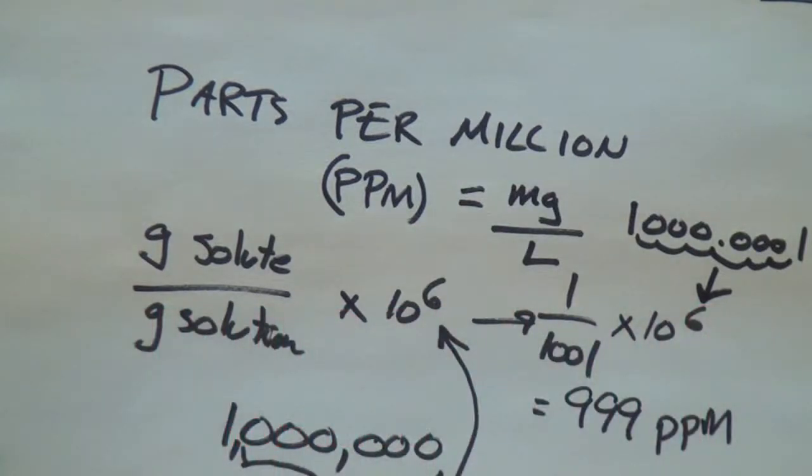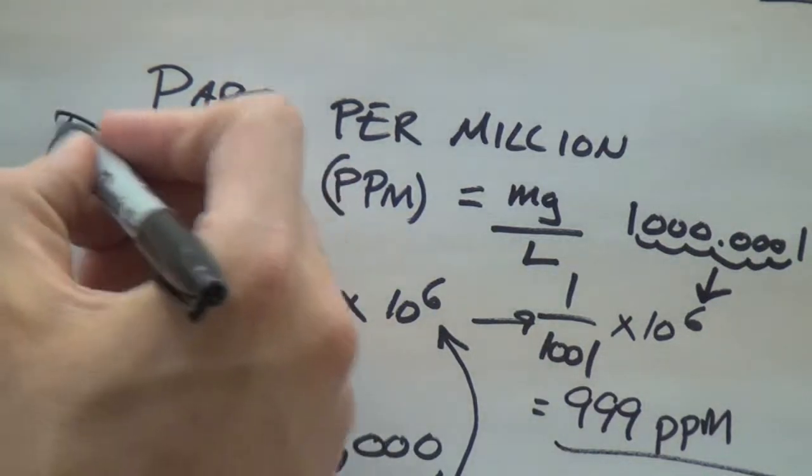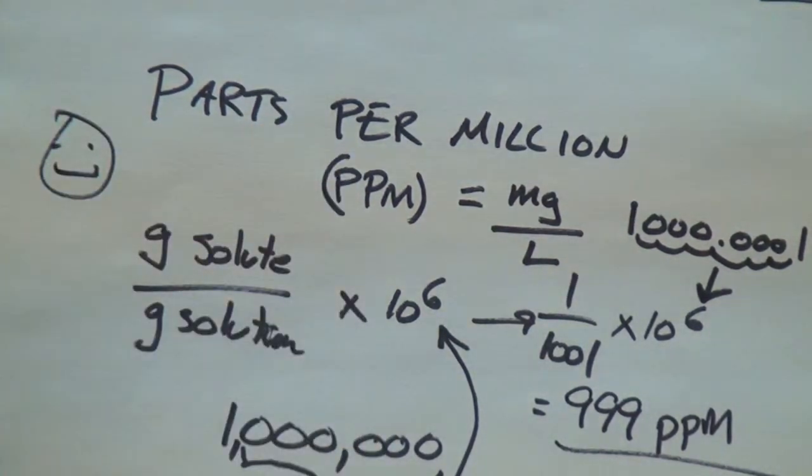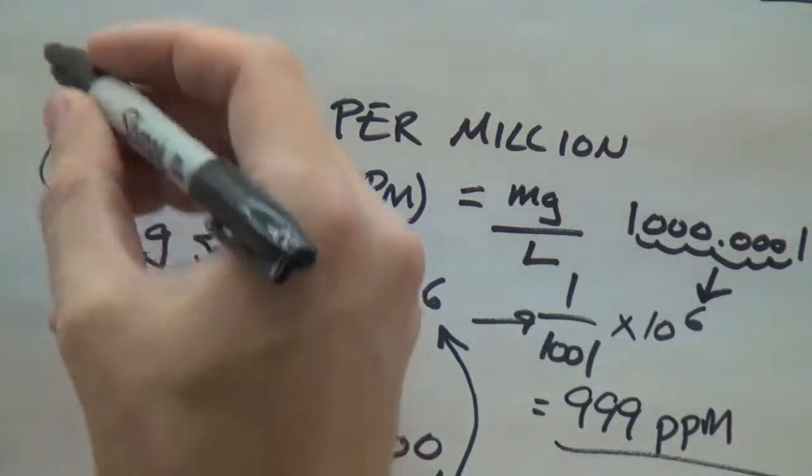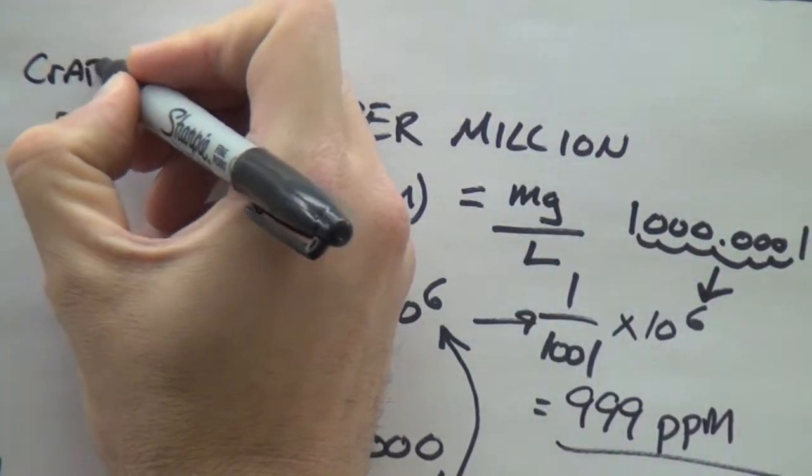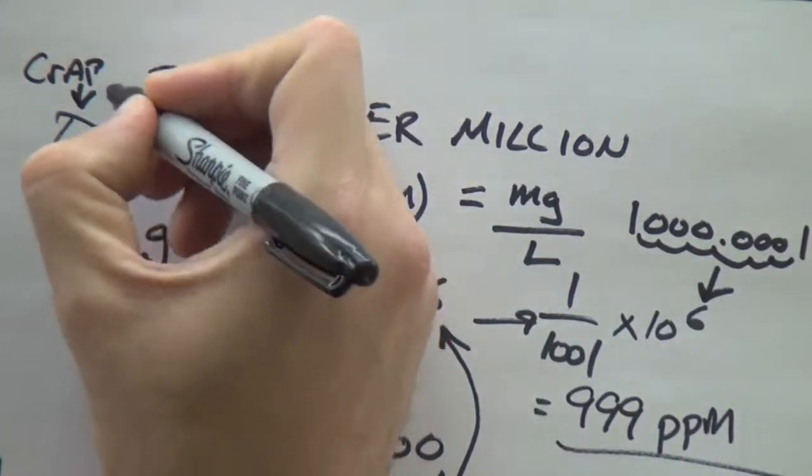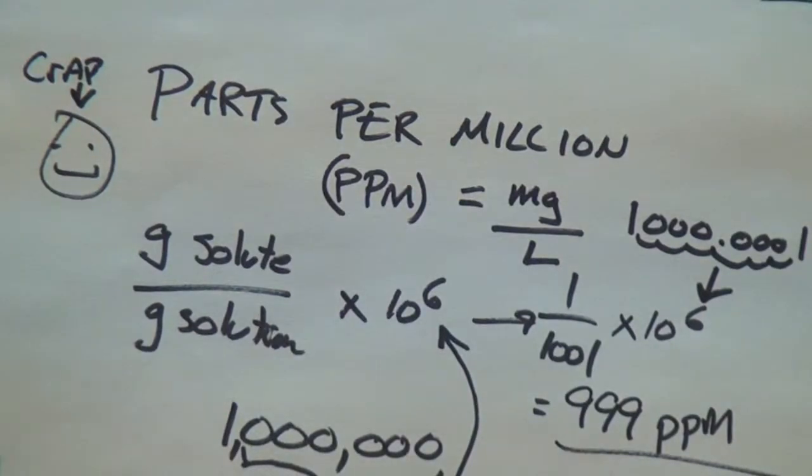So let's get back to the problem, though. We have calculated 999 parts per million. So we took our concentration, multiplied it by a million, and we would have 999 happy pieces of solute in a million parts solution. That's a crappy smiley face. Try it with a billion.